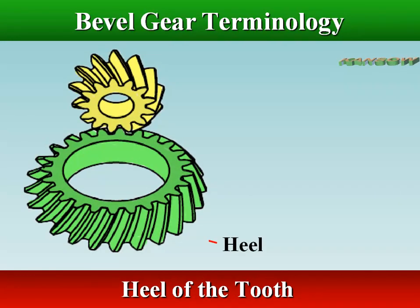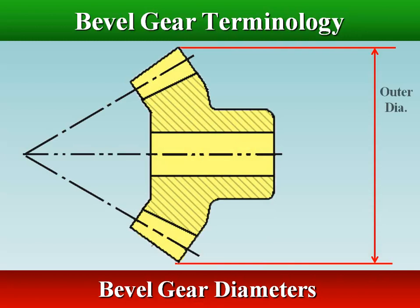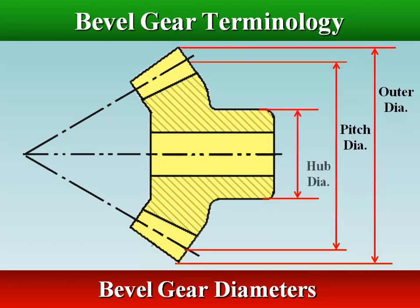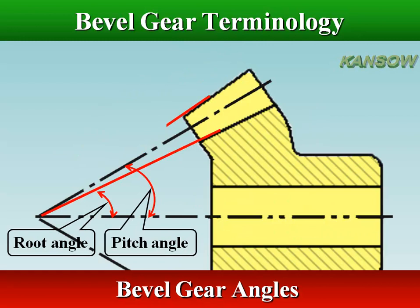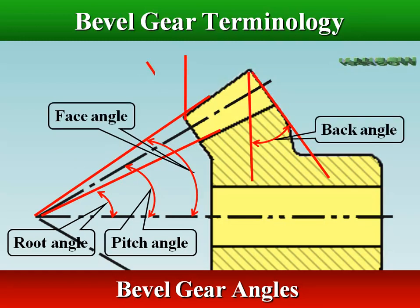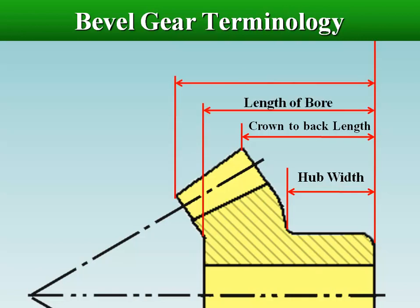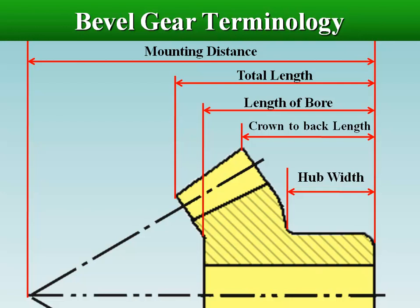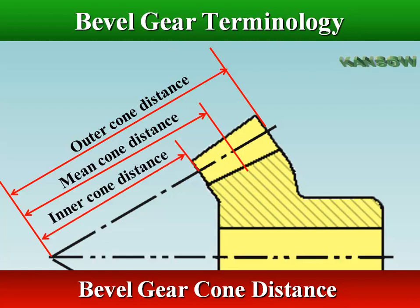The heel of a tooth on a bevel gear or pinion is the portion of the tooth surface near its outer end. The toe of a tooth is the portion of the tooth surface near its inner end. Cone distance in a bevel gear is the general term for the distance along an element of the pitch cone from the apex to any given position in the teeth.